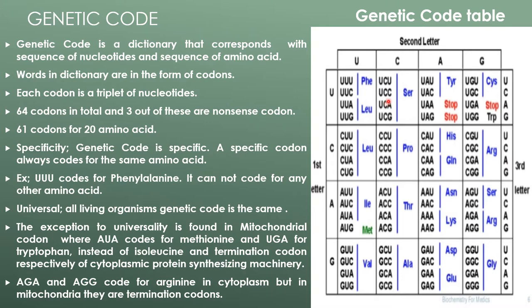The words of the dictionary are in the form of codons. Each codon is a triplet of nucleotides. There are 64 codons in total, and three out of these are nonsense codons. 61 codons specify the 20 amino acids.